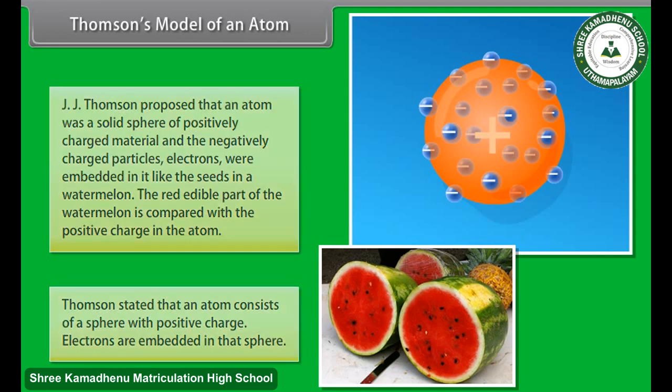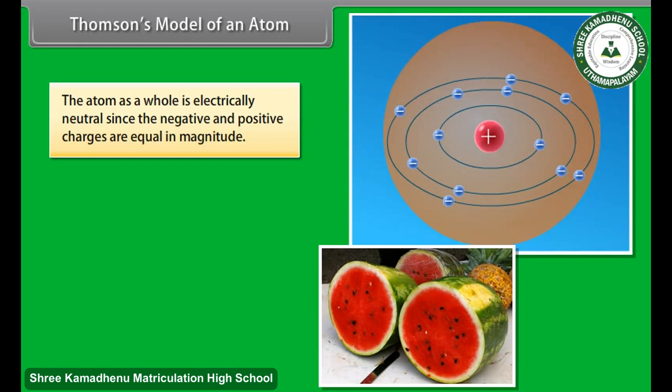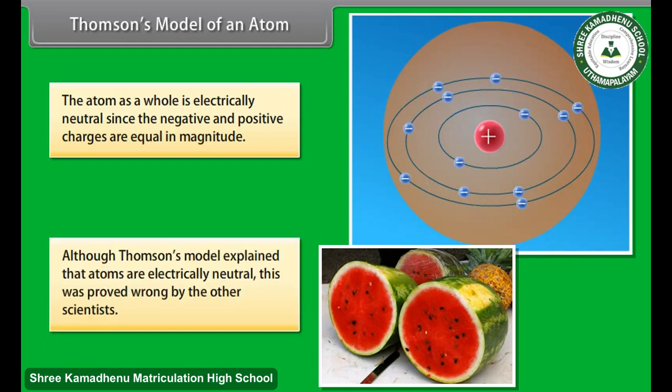The atom as a whole is electrically neutral since the negative and positive charges are equal in magnitude. Although Thompson's model explained that atoms are electrically neutral, this was proved wrong by other scientists.